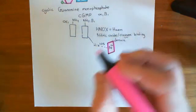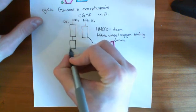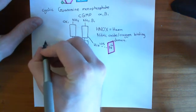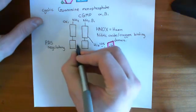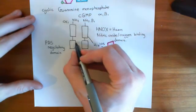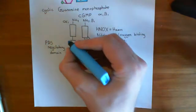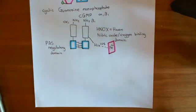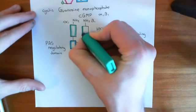Here in pink is this prosthetic heme group. The next domain onwards is the PAS-regulatory domain, present in both the alpha and the beta subunit. There are bonds linking between the two PAS-regulatory domains on each of the subunits. The PAS-regulatory domains are coloured in blue, and the HNOX domain — the heme nitric oxide/oxygen binding domain — is coloured in turquoise.